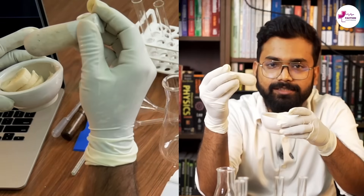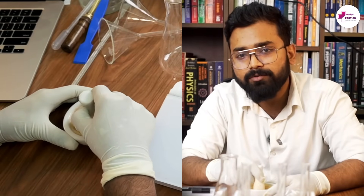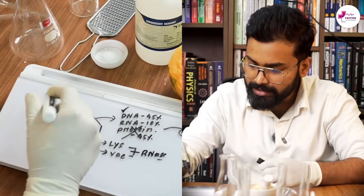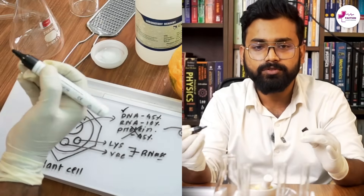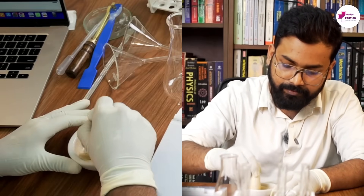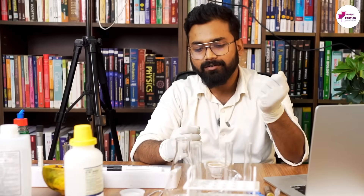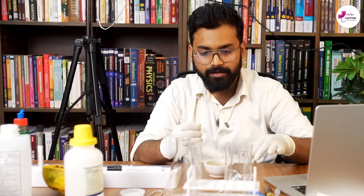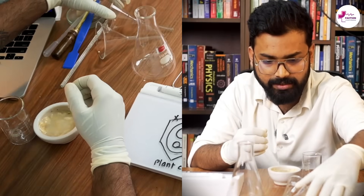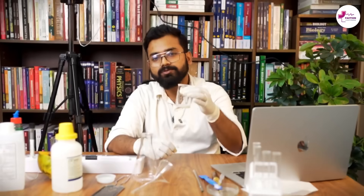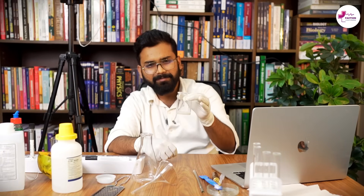I will grind the banana using a pestle and mortar. While grinding, we assume that the cell wall is being broken down by mechanical force. Our banana paste or extract solution is now ready. I will pour it into a beaker using a funnel and strainer to collect the extract.